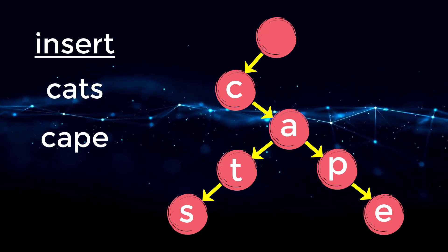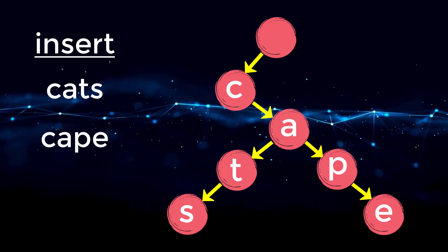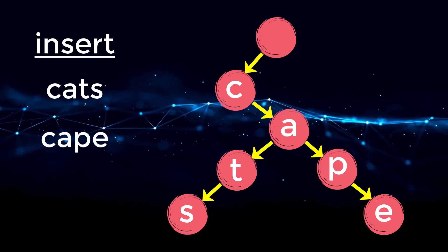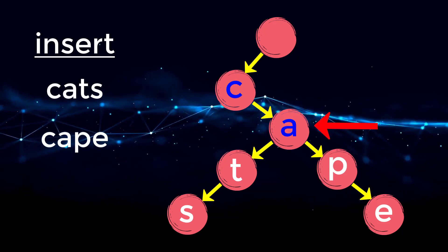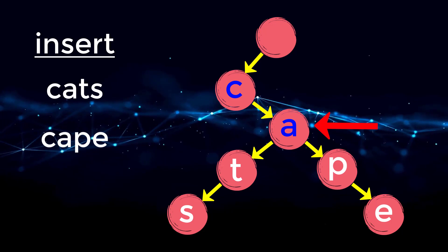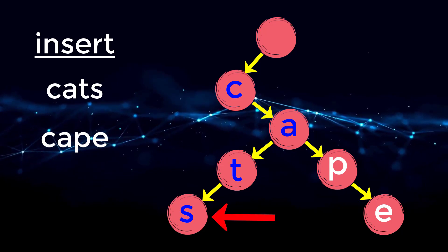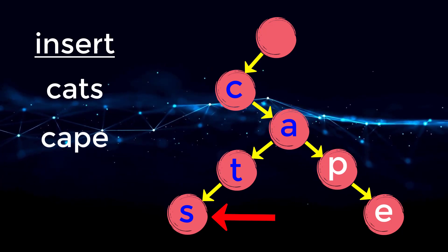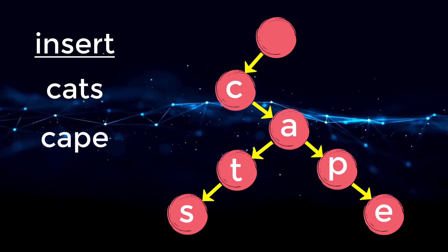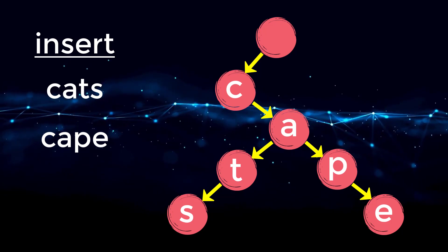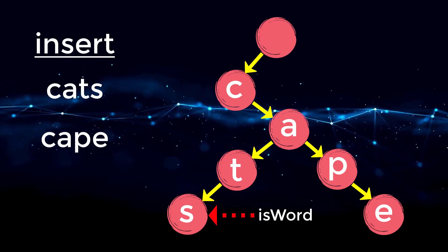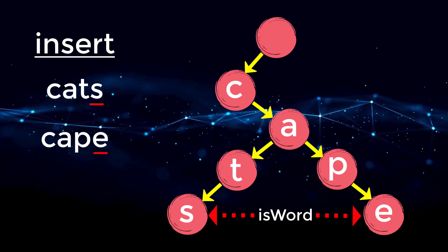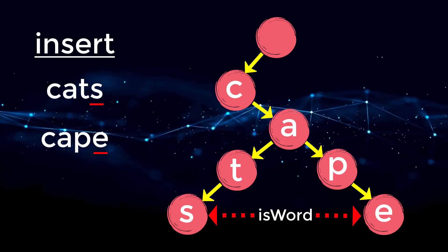Now that we've inserted both words, we need to determine at which point we've actually completed a word. For example, going down the tree to character A — C-A is not a word. But when we reach character S, that is a word because we traversed C-A-T-S. So we label which nodes are words: character S and character E. An easy way to think about this is that the last character in whatever word we're inserting will be the node marked as a word.